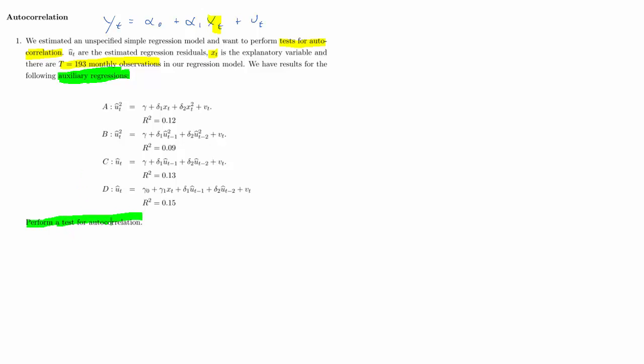Now there are four auxiliary regressions available and we want to perform a test for autocorrelation, but we only need to use one. We need to figure out which one's the correct one. The first two have as a dependent variable ut hat squared, which are proxies for the error variance. We are not interested in that, we are not wanting to test for heteroskedasticity. That's when we would be looking at these. We are interested in the autocorrelation, so c and d are relevant. What's the difference between c and d? Both of them have these two lags. The difference is whether it includes the explanatory variable from the original regression.